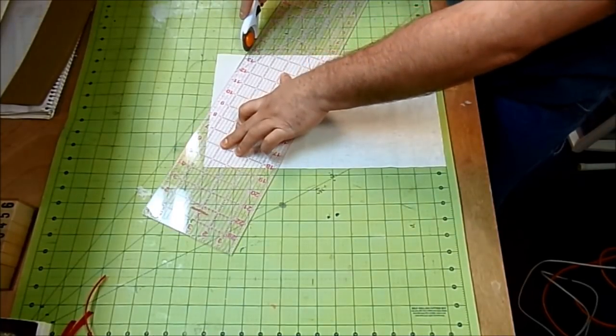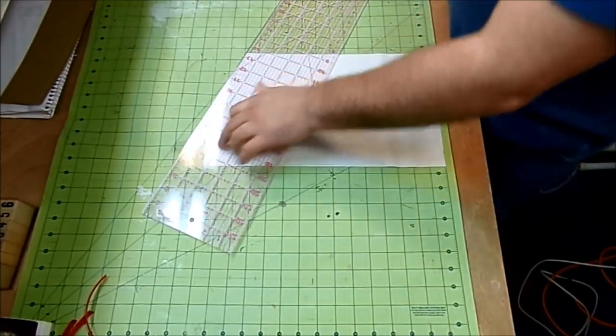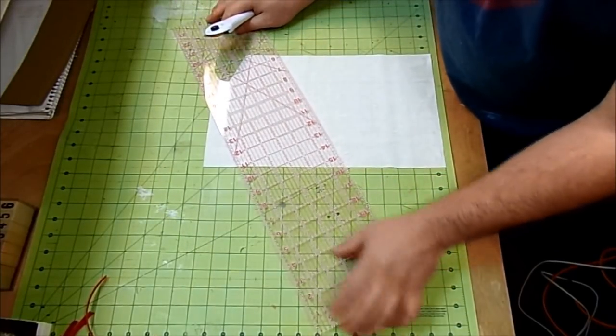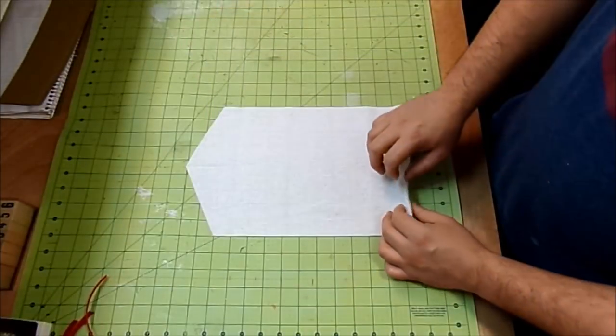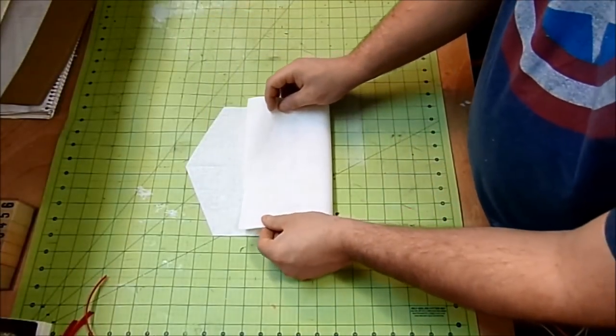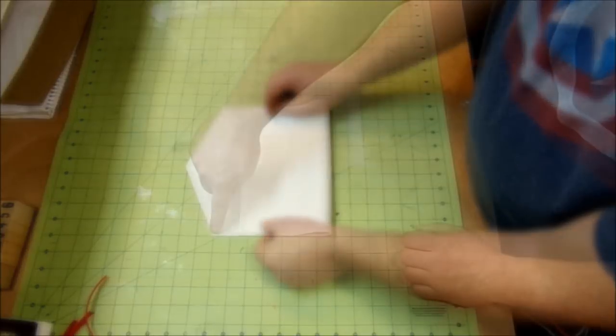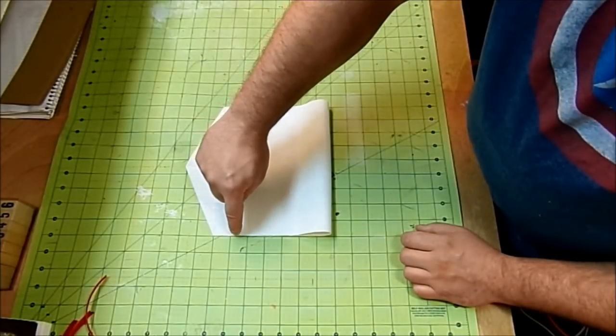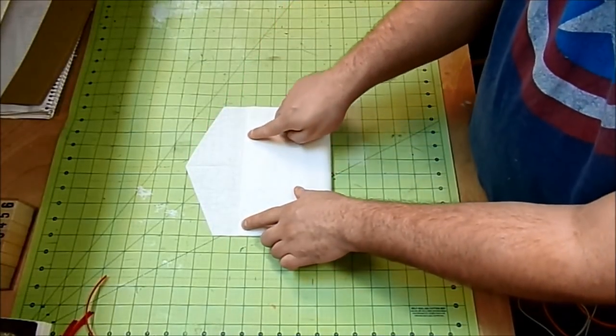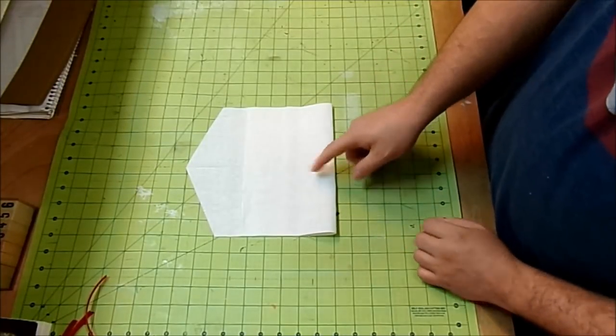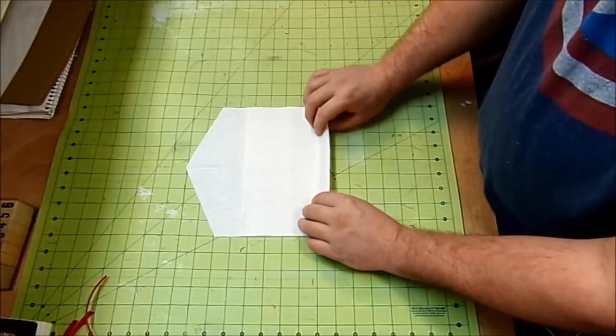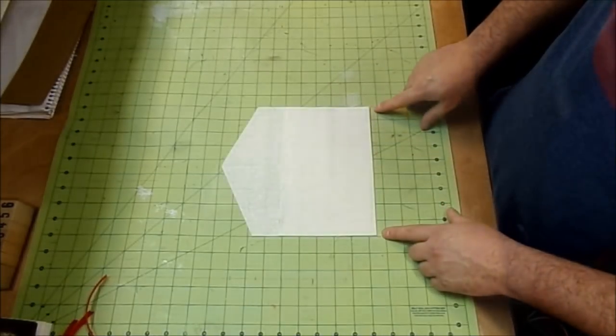Now I'm just gonna do the same thing on the other side. So now I'm just gonna take the bottom here and fold it up. From this point right here, I'm just gonna come down an inch and a half, and that's where I'm gonna line up my fabric. Now I'm just gonna take this over to my ironing board and give it a press.